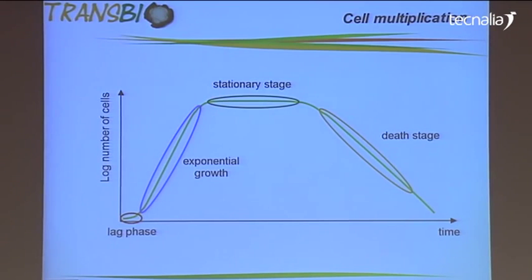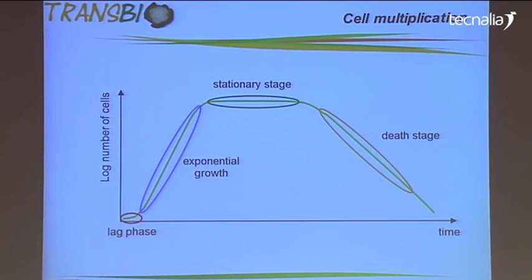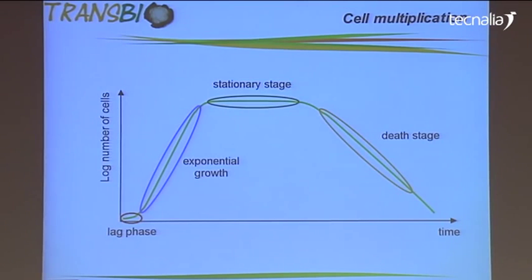However, when nutrients become scarce, or if the cell is producing some inhibiting compounds, then growth starts to slow down and we reach the stationary stage, where we observe an equilibrium between cells dividing and cells dying, or cells still maintaining viability but not dividing at such active rates. After that, we observe a death stage where more cells are dying than the ones maintaining viability.